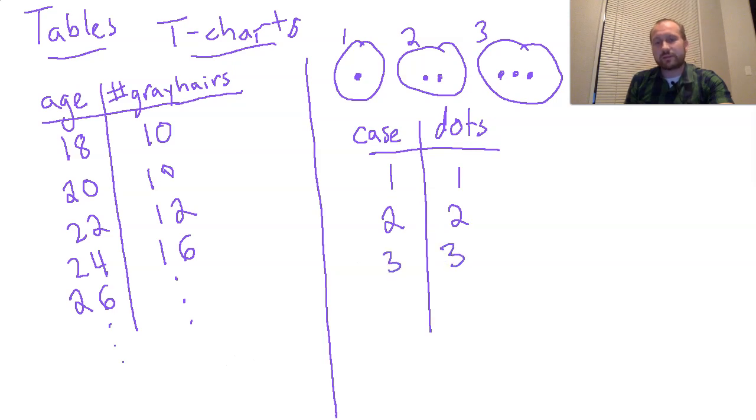And now this is the kind of data that could have a pattern to it. We start to see like probably for any case that I put, case 99, I might have 99 dots.